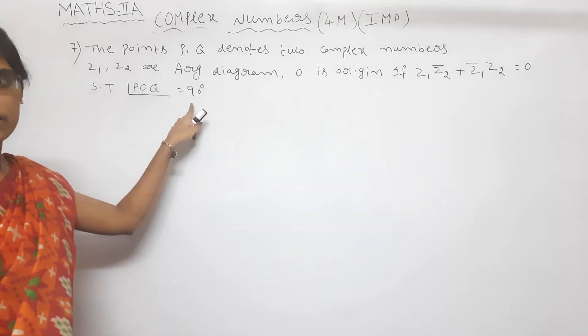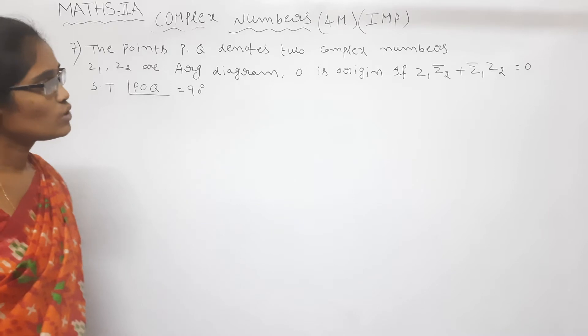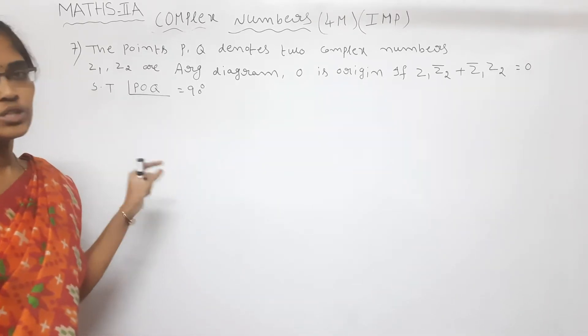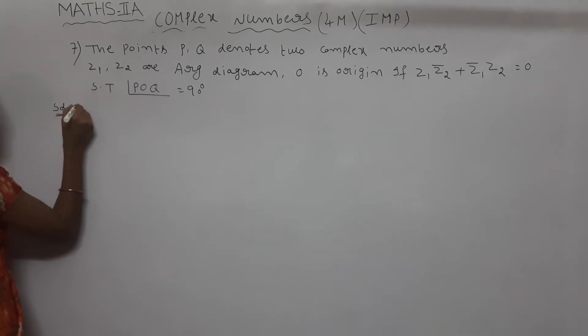show that angle POQ is equal to 90 degrees. So what is the given condition here? Z1 into Z2 bar plus Z1 bar into Z2 is equal to zero. Now see the solution.